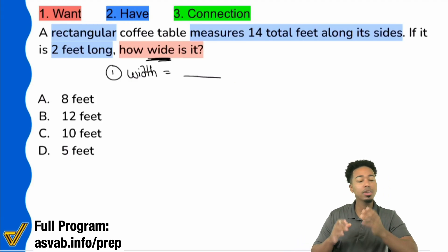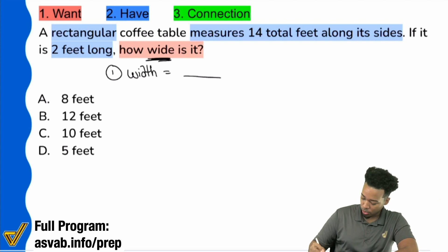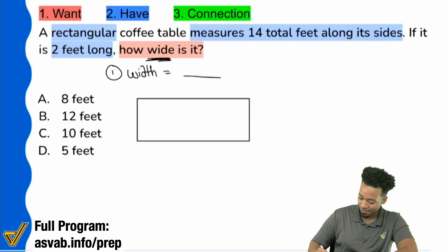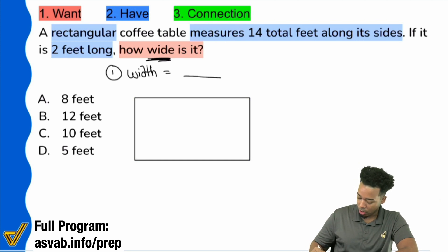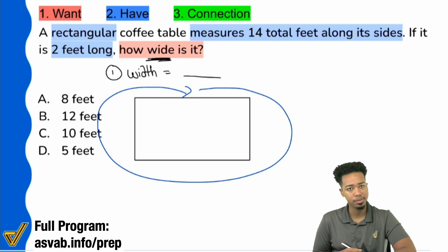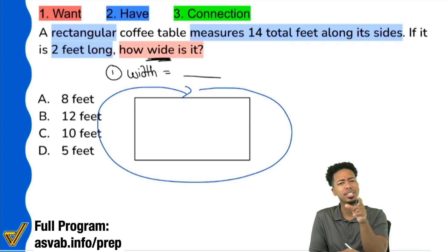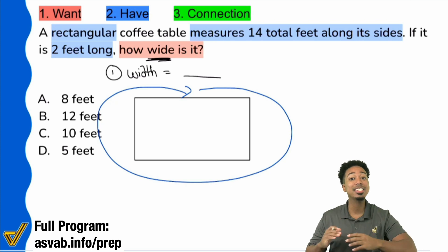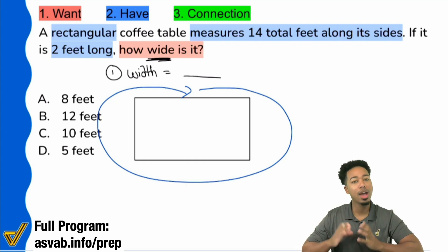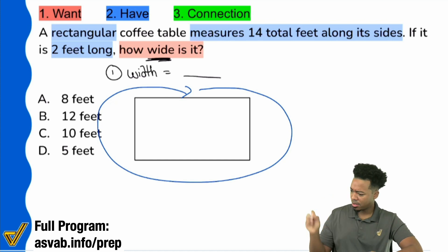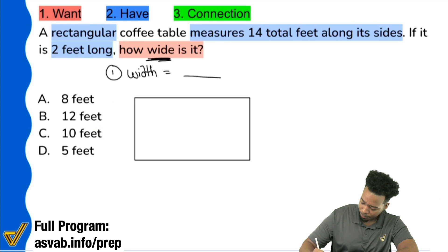We have a lot of information here that we can work with. Number one, it's a rectangle, so we can go ahead and give ourselves the opportunity to draw this. We can see that it says it measures 14 total feet along its sides, so all the way around the shape is 14 total feet. When we're talking about the distance around a shape, how long it is all the way around, what idea is that? That's called perimeter. We need to know and recognize these ideas in word problems because oftentimes they're giving you these ideas in English and you have to translate it into math.